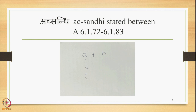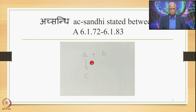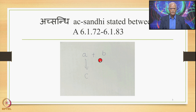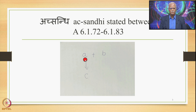To put Ekasthanika Ekadesha in diagrammatical form: we have A plus B, both in Samhita mode, in extreme proximity. In this situation, A is substituted by C. A is the Sthani, B is the right-hand environment, and A is substituted by C. The input is A plus B and the output is C plus B — one substitute in place of one substituent. This is what Ekasthanika Ekadesha means.